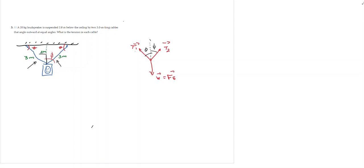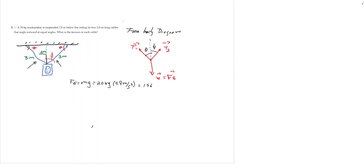If I make a free body diagram, what I will get is a diagram where we have the tensions and we have the force of gravity. So the first thing I am going to do in this exercise is to calculate the force of gravity. The force of gravity — which is basically the weight — is equal to mass times gravity, and it is equal to 20 kilograms times 9.8 meters per square second. So the force of gravity would be equal to 196 newtons.